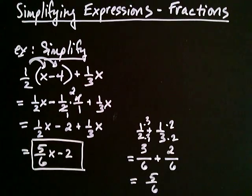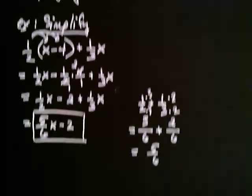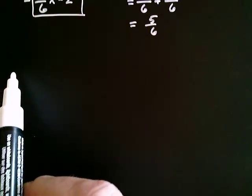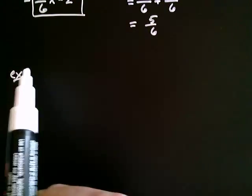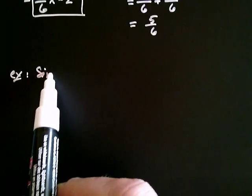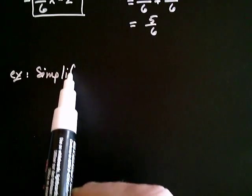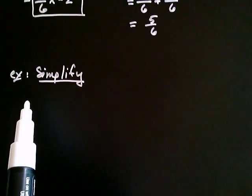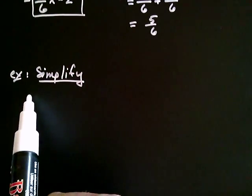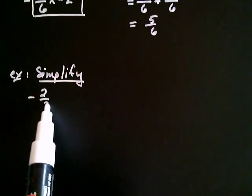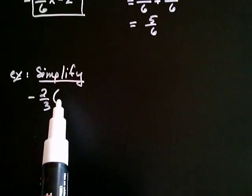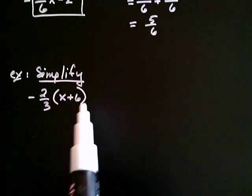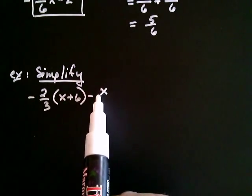Let's take another example that's a little more complicated, but still involving fractions. Let's say we wanted to simplify negative two thirds multiplied by the quantity x plus six, minus x over three.